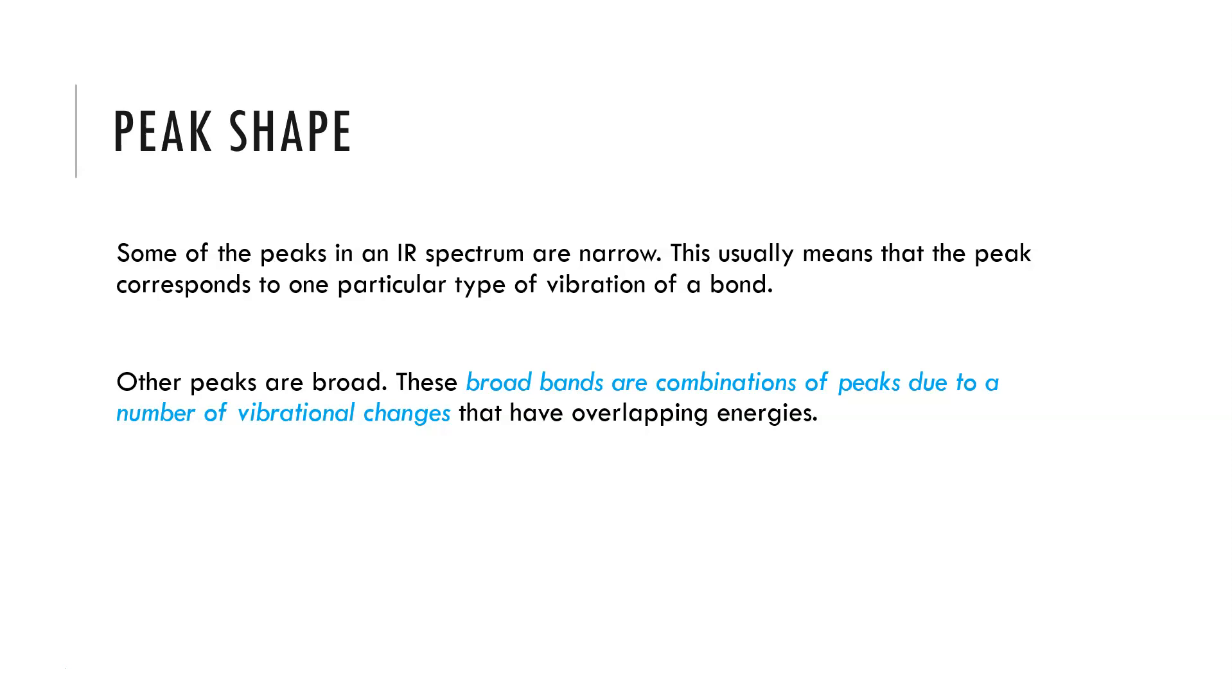Some of the peaks in the spectrum are narrow. This generally means that the peak corresponds to one particular type of vibration and bond. As more vibrational modes are present we will get overlapping of those, like we see in the carboxylic acid OH region. These broad bands occur due to combinations of different absorption frequencies that overlap each other.